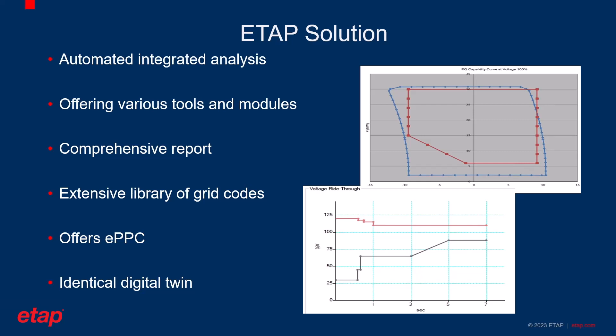ETAP also offers various tools and modules which give the user flexibility to customize the analysis based on their specific needs and requirements. As a result of the analysis, ETAP's solution provides a comprehensive report which is very self-explanatory, including useful information and insights that can be interpreted in terms of either validating that the power plant is meeting the grid code requirement or finding a solution in case of any deficiencies.